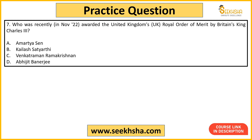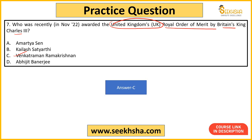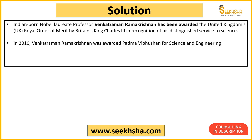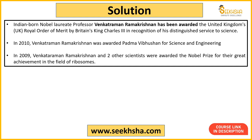Seventh question: Who was recently awarded the United Kingdom's Royal Order of Merit by King Charles III in November 2022? The answer is C — Venkatraman Ramakrishnan. He is a scientist who received the Padma Vibhushan in 2010 and the Nobel Prize in 2009 for his research in the field of ribosomes. This type of award-specific question is commonly asked in APFC and EPFO-type exams.